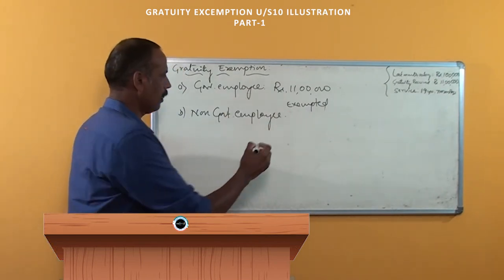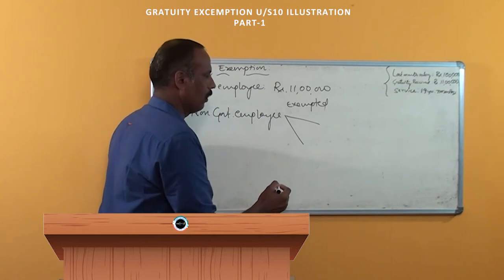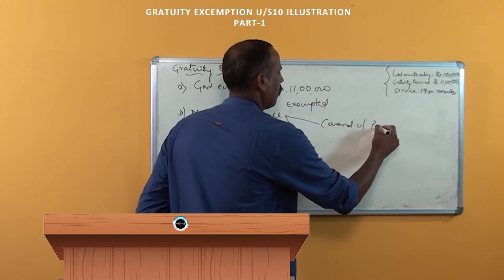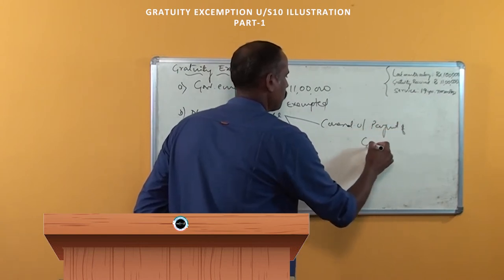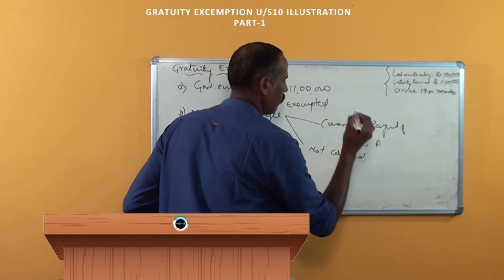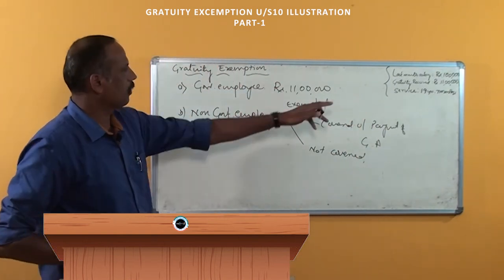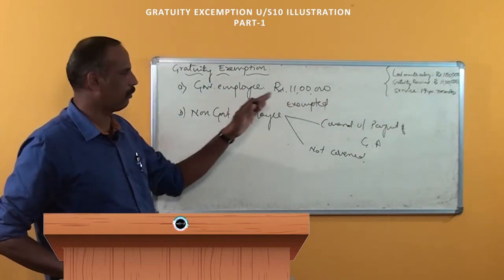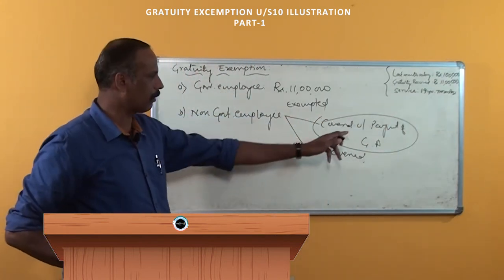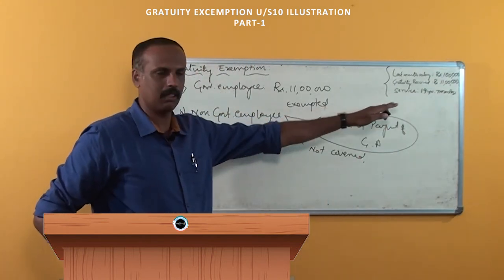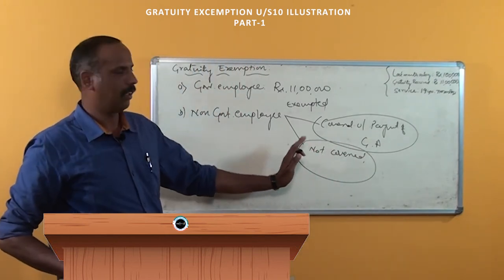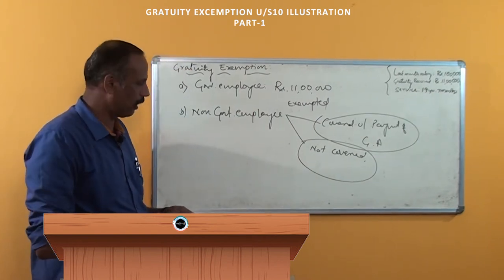In case of the non-government employee we classify into two: one is covered under the Payment of Gratuity Act, another one is not covered. As per this example, if he is a non-government employee covered under the Payment of Gratuity Act, what is the exemption? And if he is not covered under the Payment of Gratuity Act, what is the exemption? Let us take each example one by one.